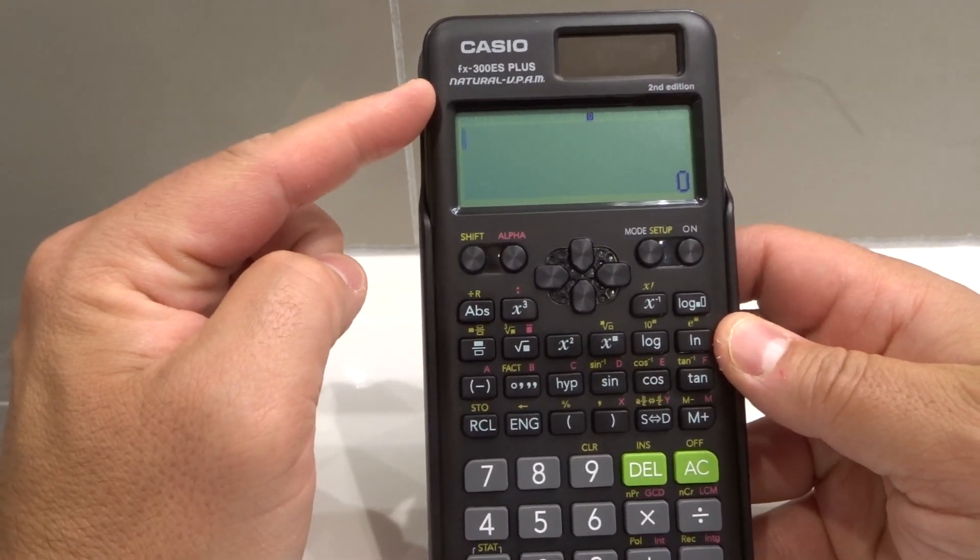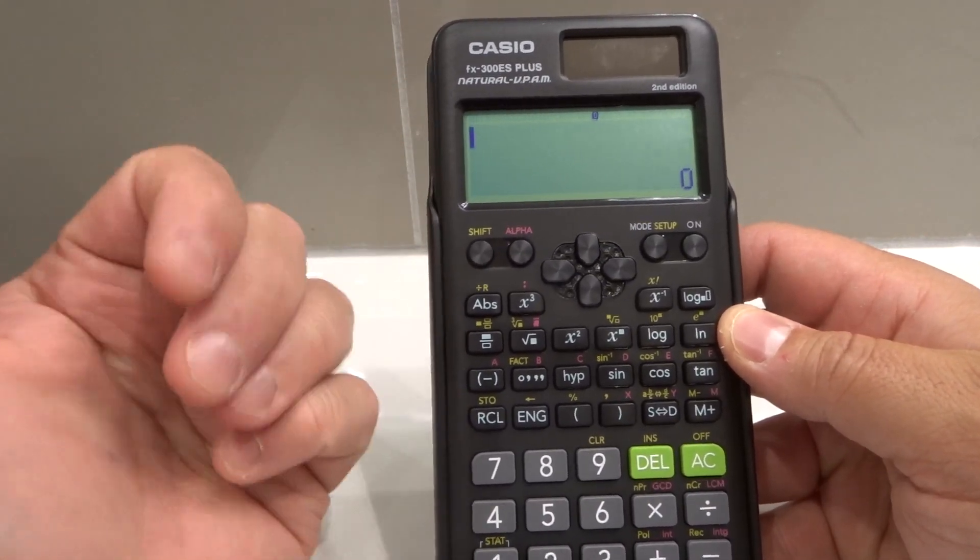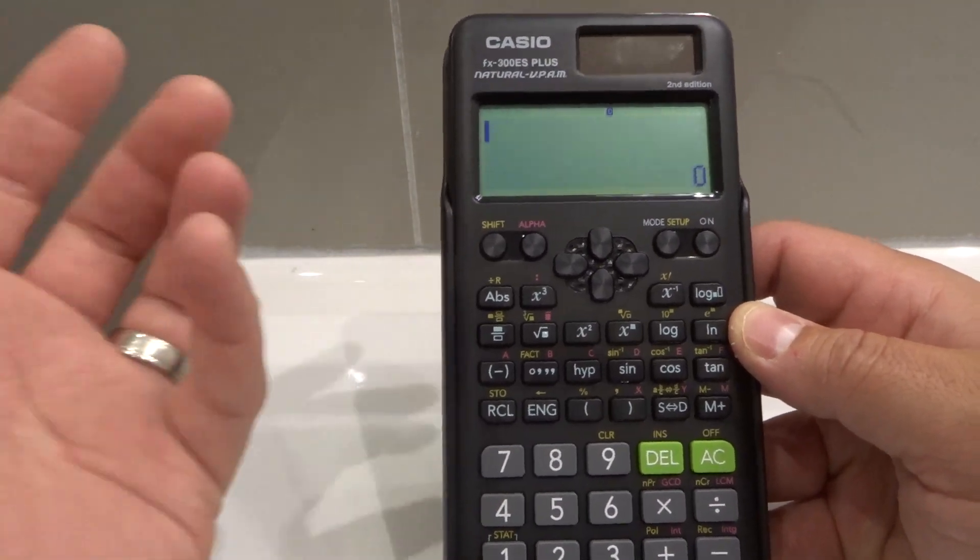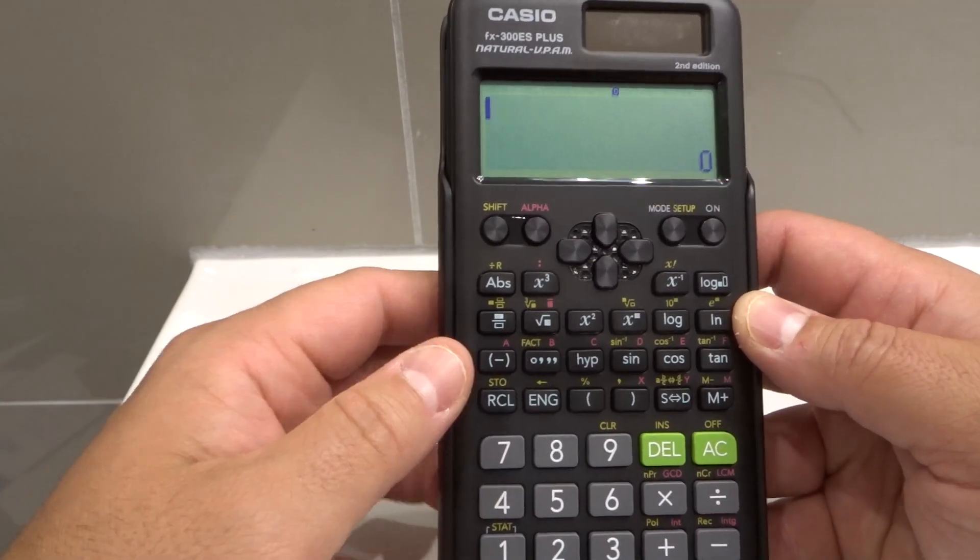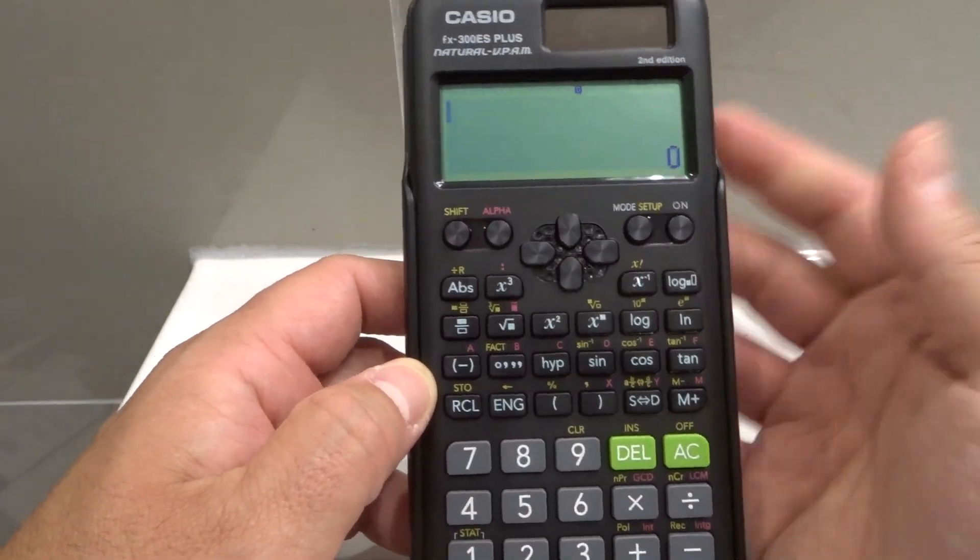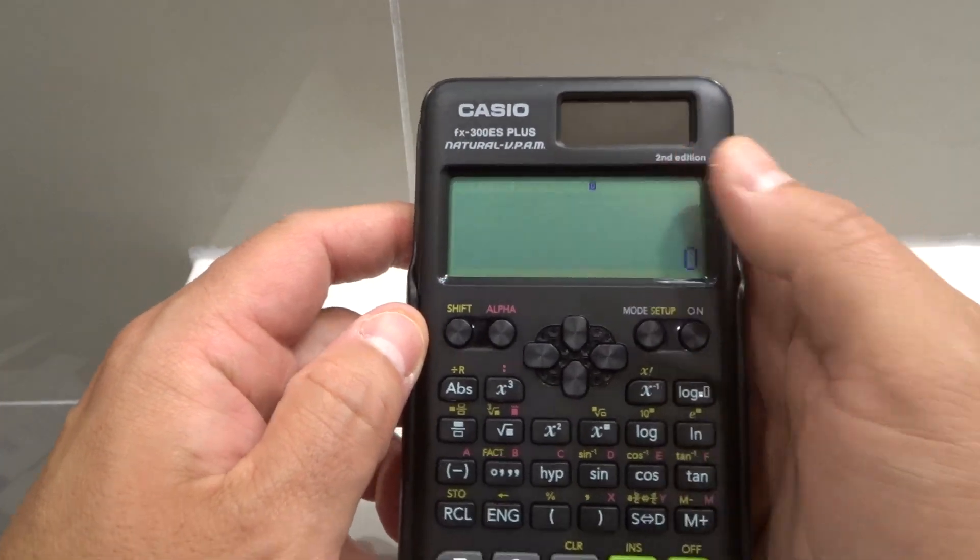This is the specific model of Casio Scientific Calculator that I'm using. If yours is different, you're probably going to have to maybe change the instructions ever so slightly, but it's probably going to be very similar so you can still pay attention. And if you have this specific model, then the instructions are obviously going to be exactly the same. That's the model number right there and it's second edition just to be clear.